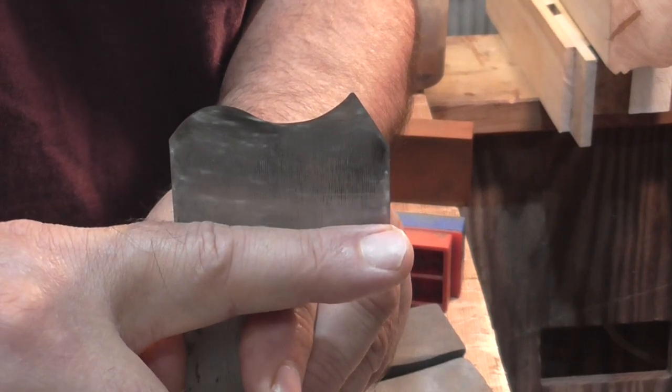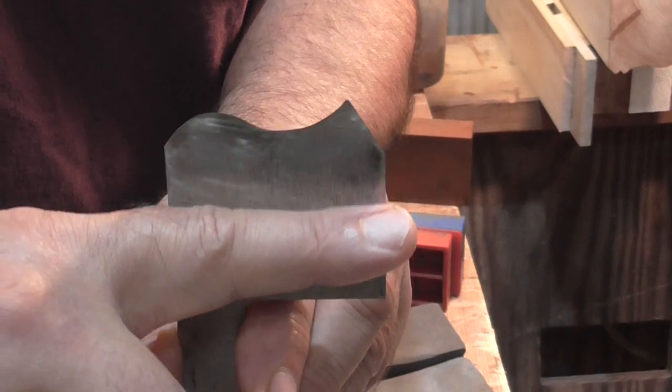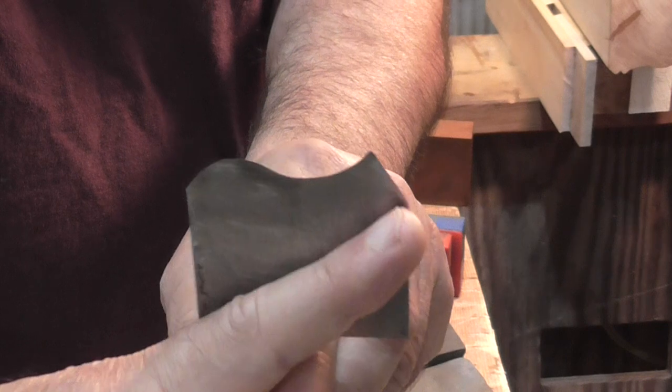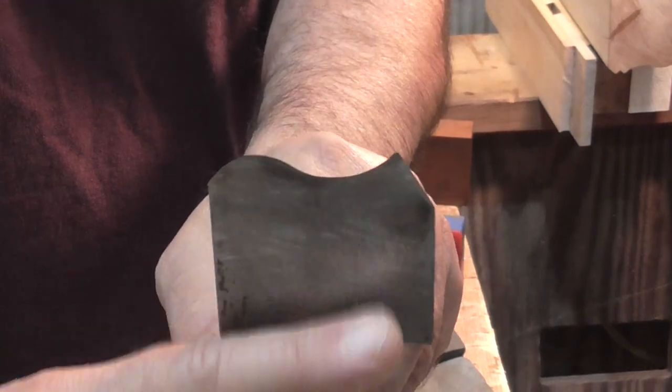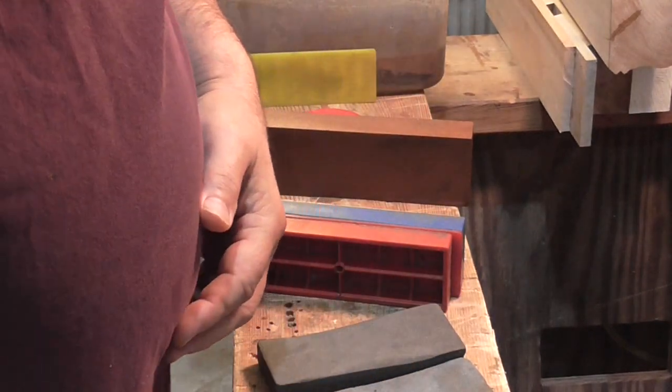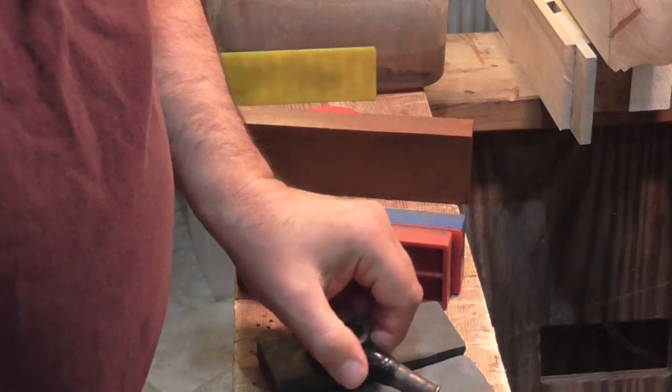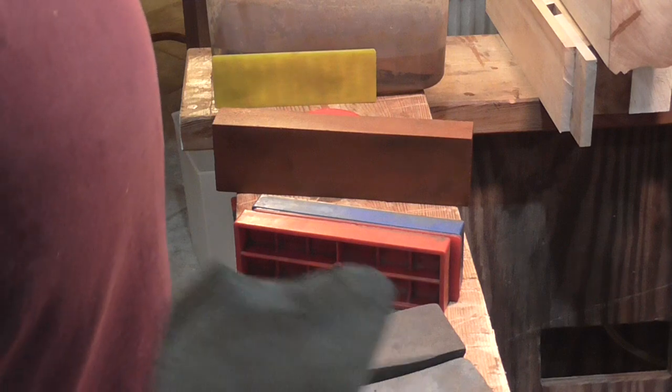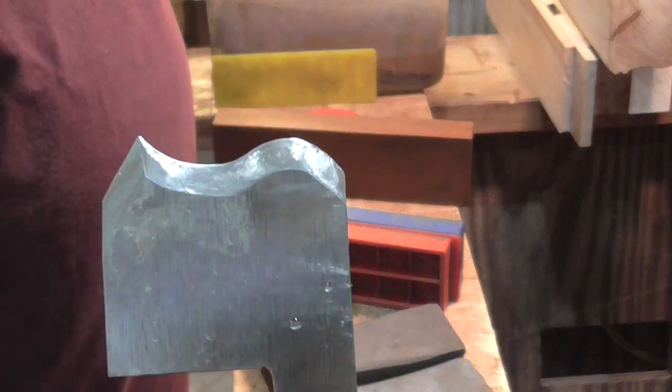Also because of the spring angle, what happens is as you sharpen it this blade reduces this way and you get more wear out of this blade. If it was shaped like this you're going to come to a point where you can't sharpen it anymore and you have to throw it away. So that's another thing that the spring angle gives you. You don't need fancy tools, you don't need a fancy grinder, you just need to know what you're doing and take your time.